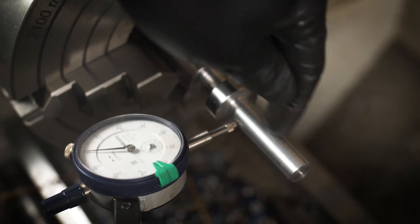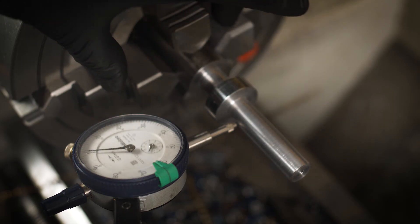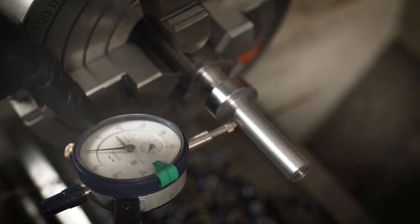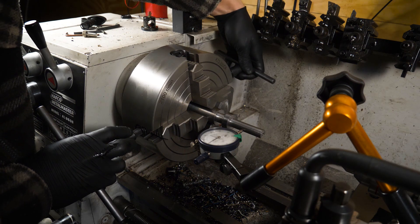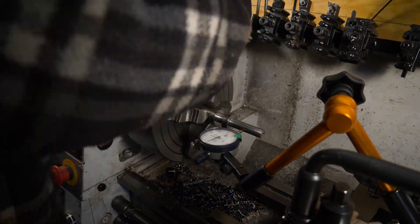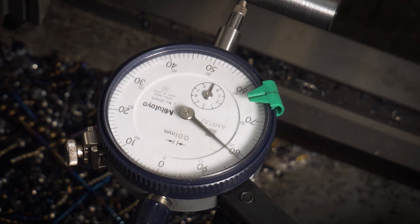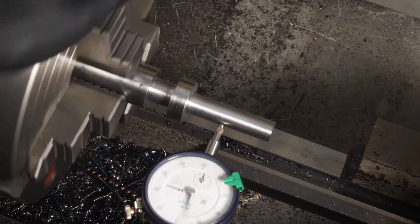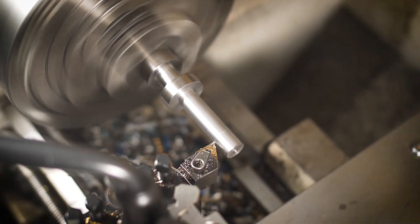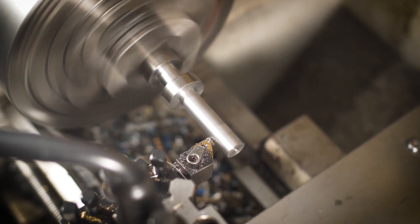I need to turn an eccentric section here, so I'll offset the part in the four jaw chuck and reference the dial indicator. I'm taking light cuts due to the stick out and the lack of tailstock support.